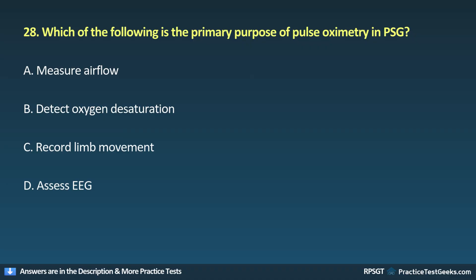Question 28: Which of the following is the primary purpose of pulse oximetry in PSG? A. Measure airflow, B. Detect oxygen desaturation, C. Record limb movement, D. Assess EEG.